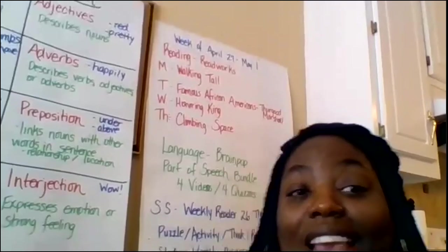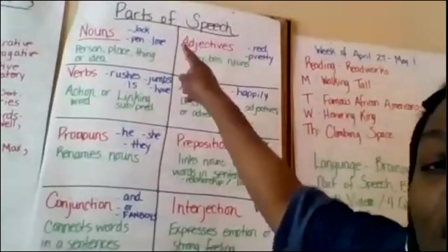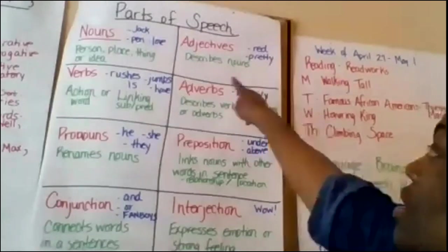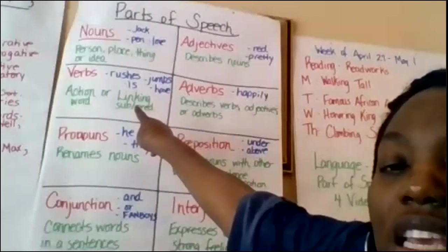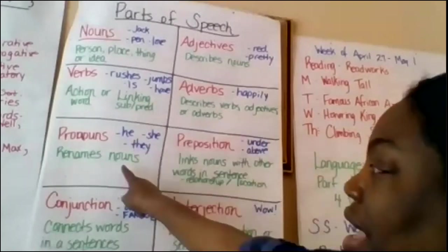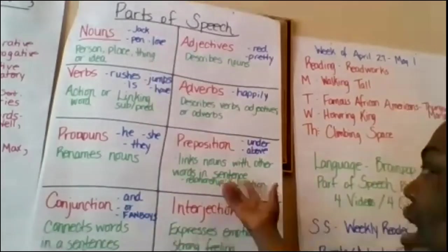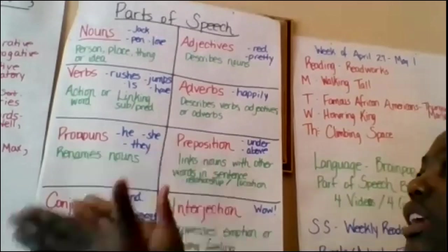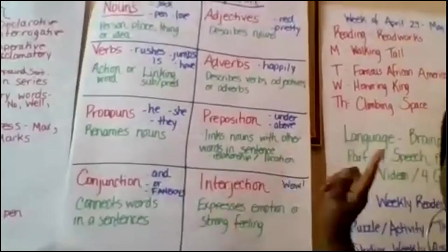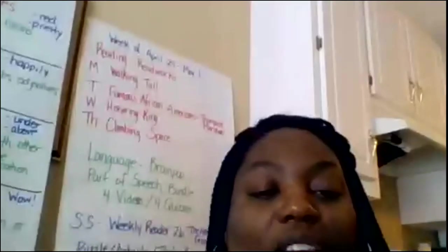Remember our eight parts of speech: nouns — person, place, thing, or idea; adjectives — describe the noun; verbs — show action or are linking; adverbs — describe verbs, adjectives, or other adverbs; pronouns — rename the nouns; prepositions — link nouns with other words in the sentence, showing relationship or location; conjunctions — connect words in the sentence; and interjections — show emotion. Now we're ready for our game!